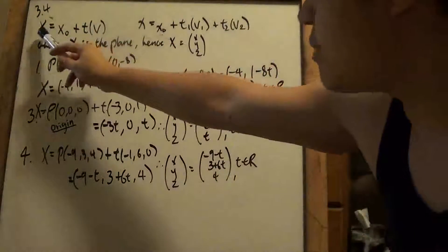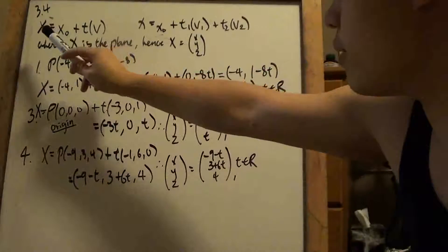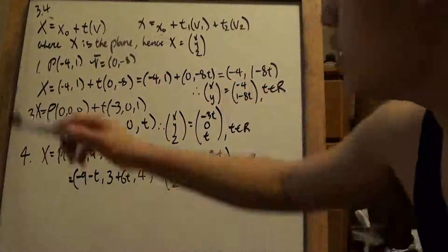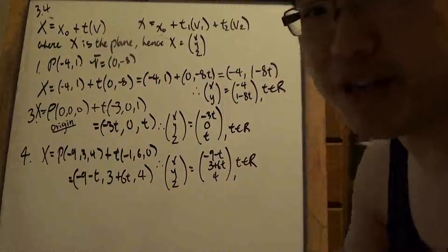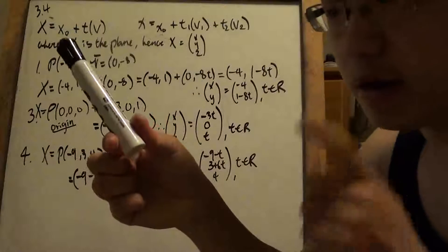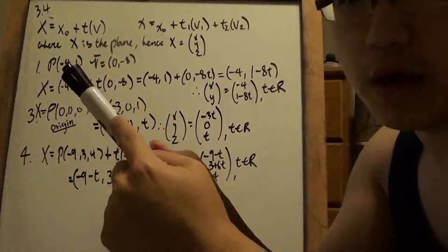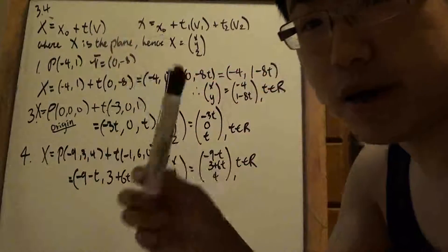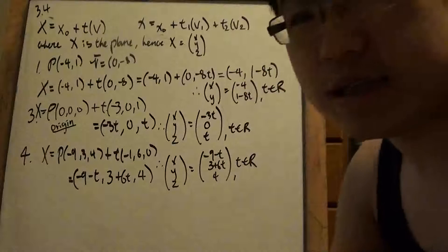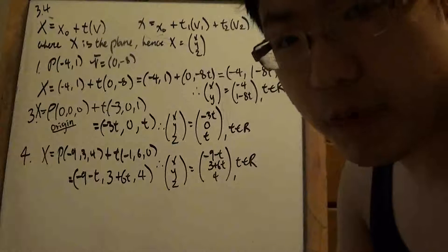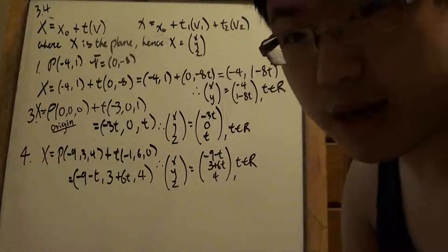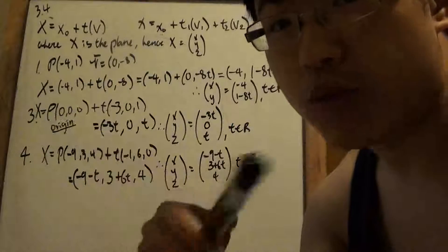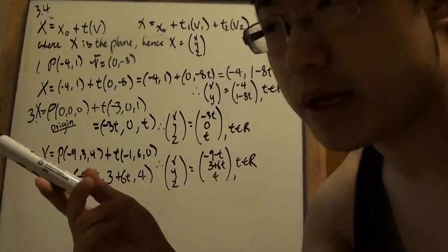Let's explain what these equations mean. X is some kind of a vector — or a plane, but we'll get to that. For now, just think of X as just another vector, and X0 happens to be just a point that the vector is intercepting. So the point is anywhere on here — it could be here, it could be here, as long as it's a point. Then we add it by T times V, where V is another vector, and T is basically a parameter.